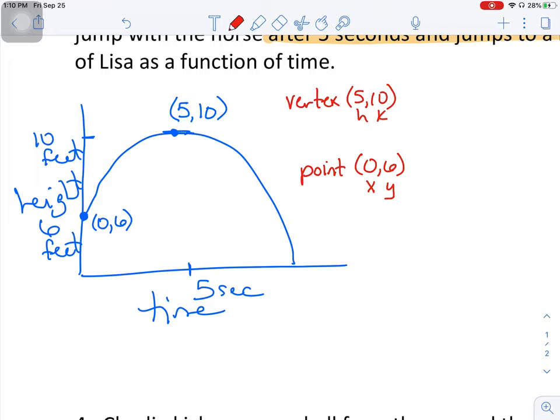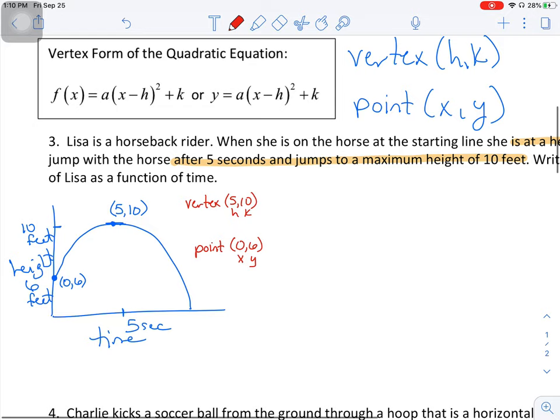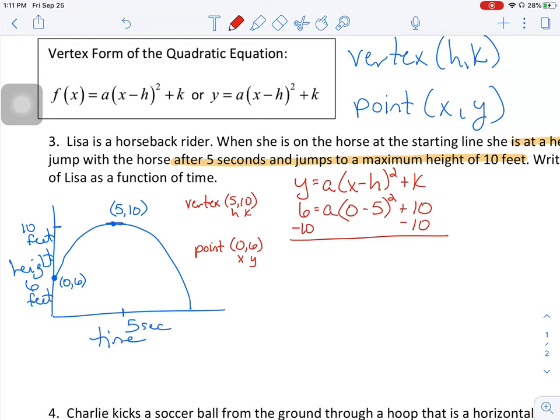Now that we know HK and x, y, I can use this vertex form again. Y is equal to a times x minus h squared plus k. And I'm going to replace everything I know. So y gets replaced with 6. A is the piece I don't know. X gets replaced with 0. H is 5 squared plus k is 10. My job now is to solve for a. So I'm going to subtract 10 from both sides. So 6 minus 10 is negative 4 equals a times 0 minus 5 is negative 5 squared. Negative 5 squared is 25. I'm going to divide everything by 25 to get a completely by itself. And a is equal to negative 4 over 25.